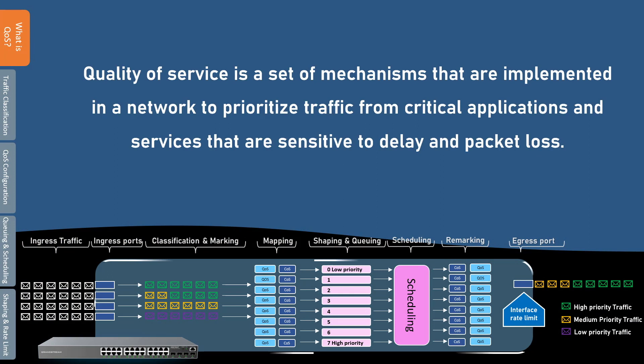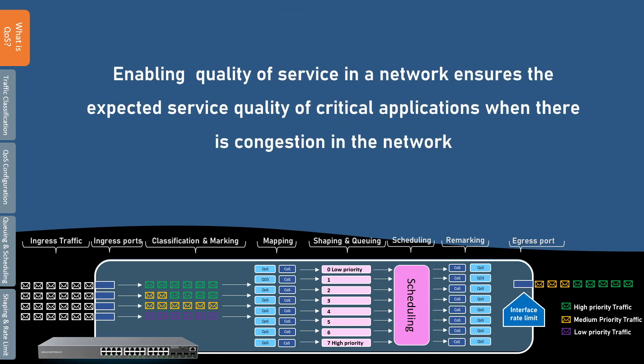Quality of service is a set of mechanisms that are implemented in a network to prioritize traffic from critical applications and services that are sensitive to delay and packet loss. Enabling quality of service ensures the expected service quality of critical applications when there is congestion in the network. For instance, applying QoS to voice and video traffic can minimize the impact of network congestion by ensuring this type of traffic has priority across the network.